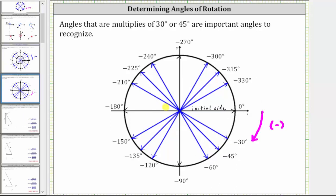If the rotation is clockwise, the angle is negative. So if the initial side is here and the terminal side is rotated clockwise, we have negative 30 degrees, negative 45 degrees, negative 60 degrees, negative 90 degrees. One complete rotation clockwise is equal to negative 360 degrees.